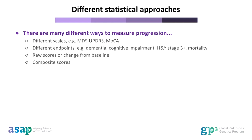Now I will cover the practical aspects of a progression GWAS. The first thing to consider is that there are many different approaches you can use. There are multiple ways to measure progression in Parkinson's, with many different scales measuring a variety of symptoms. For motor symptoms, the MDS-UPDRS Part 3 is the most widely used assessment, and is also frequently used to assess progression in clinical trials. However, for other symptoms such as cognition, there are several scales including the MOCA, MMSE, Scopa-COG, or other neuropsychiatric tests, and these may measure different aspects of cognition. Another thing to consider if you are analysing multiple cohorts is that different cohorts may use different scales, which can be challenging for harmonising data across cohorts.